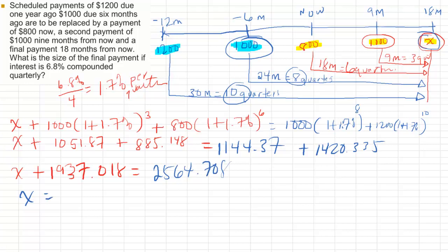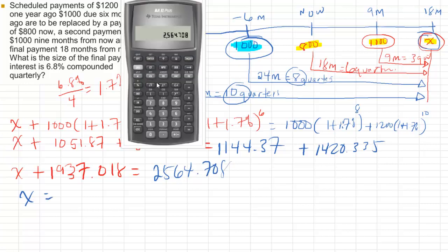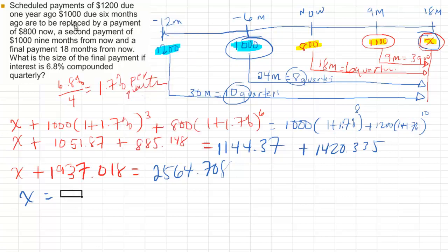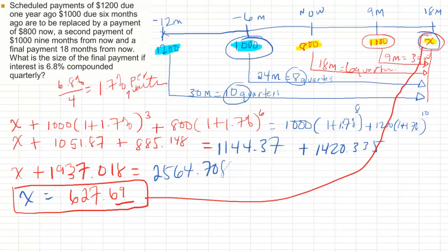And then I solve. So 2564708 minus recall 7, which is where I put that 1937018, and the answer is 627.69. That is the missing replacement payment, and that's how much, that's what X needs to be to replace those two payments.